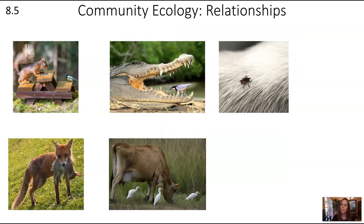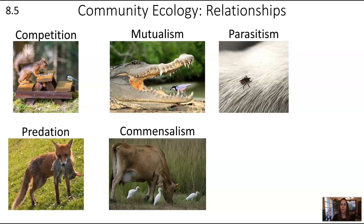Another way to examine a community is by looking at the relationships between different species. There are five different types of relationships seen in communities. Starting top left: competition, where the squirrel and the bird are fighting over the same resource — food on a little picnic bench. Next is mutualism, where a bird is cleaning the mouth of a crocodile; both benefit — the reptile gets clean teeth and the bird gets a snack.